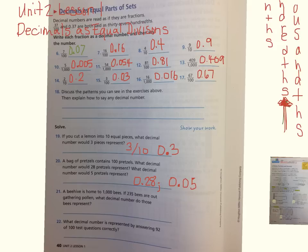A beehive is home to one thousand bees. If two hundred and thirty-five bees are out gathering pollen, what decimal number do those bees represent? I want this five to sit in the thousandths place.